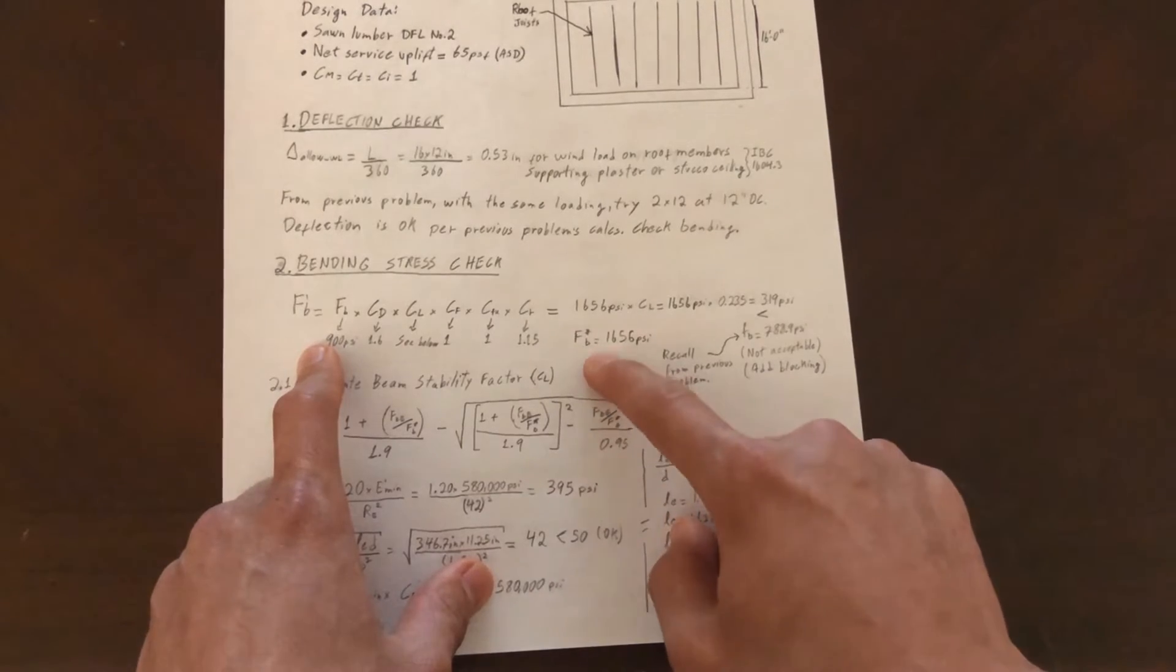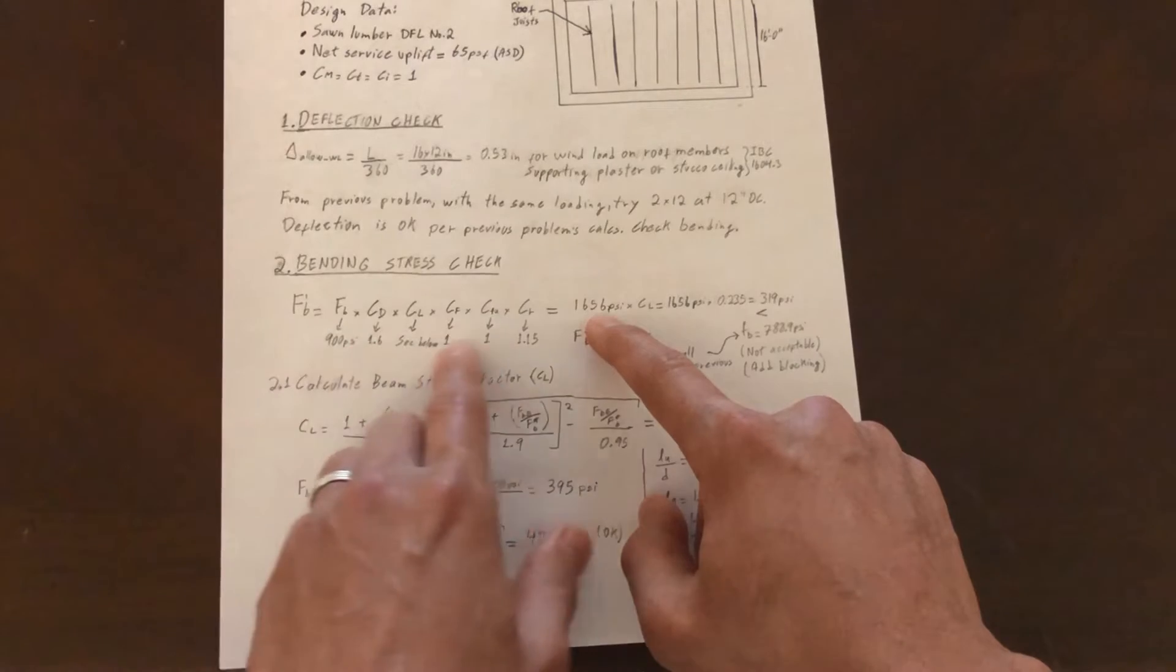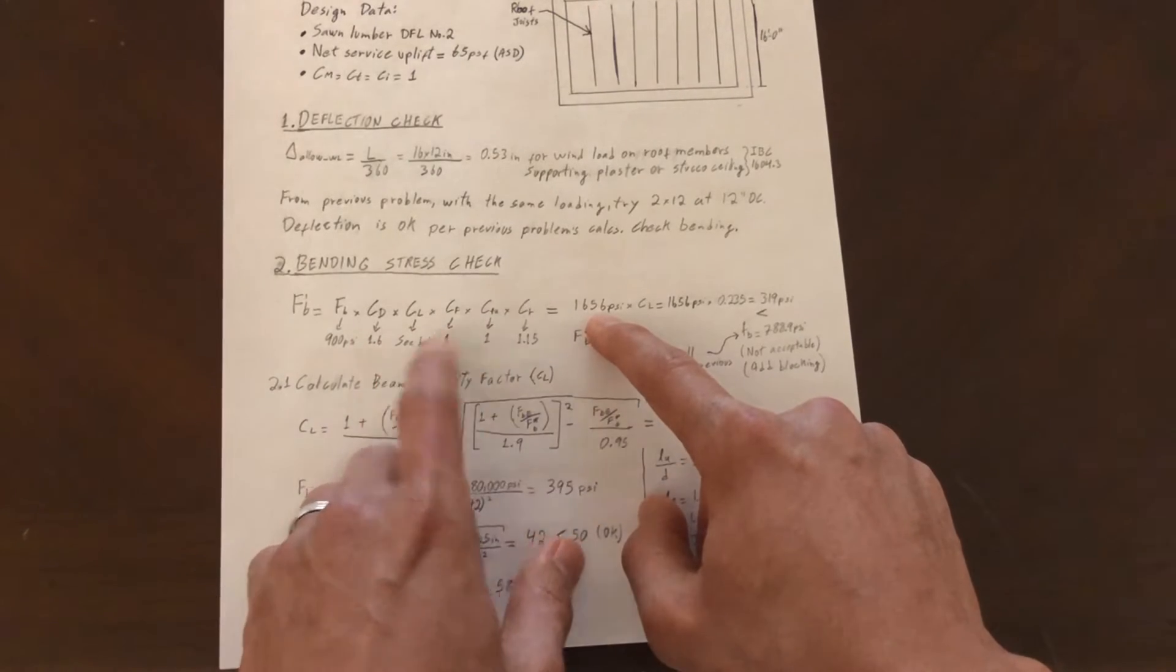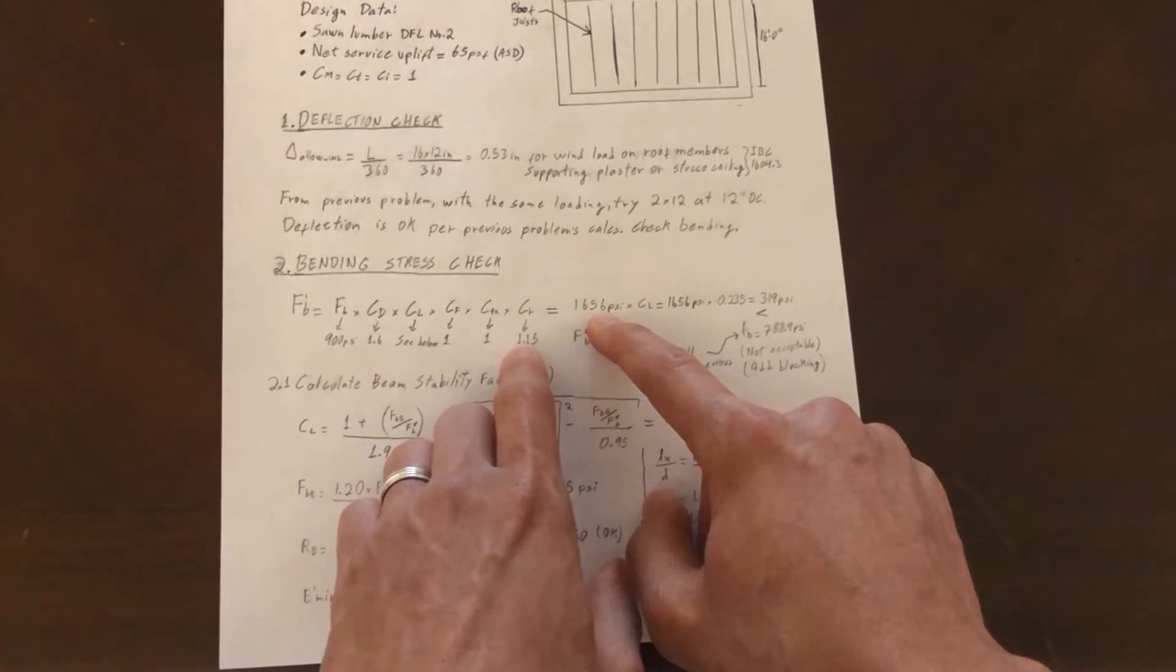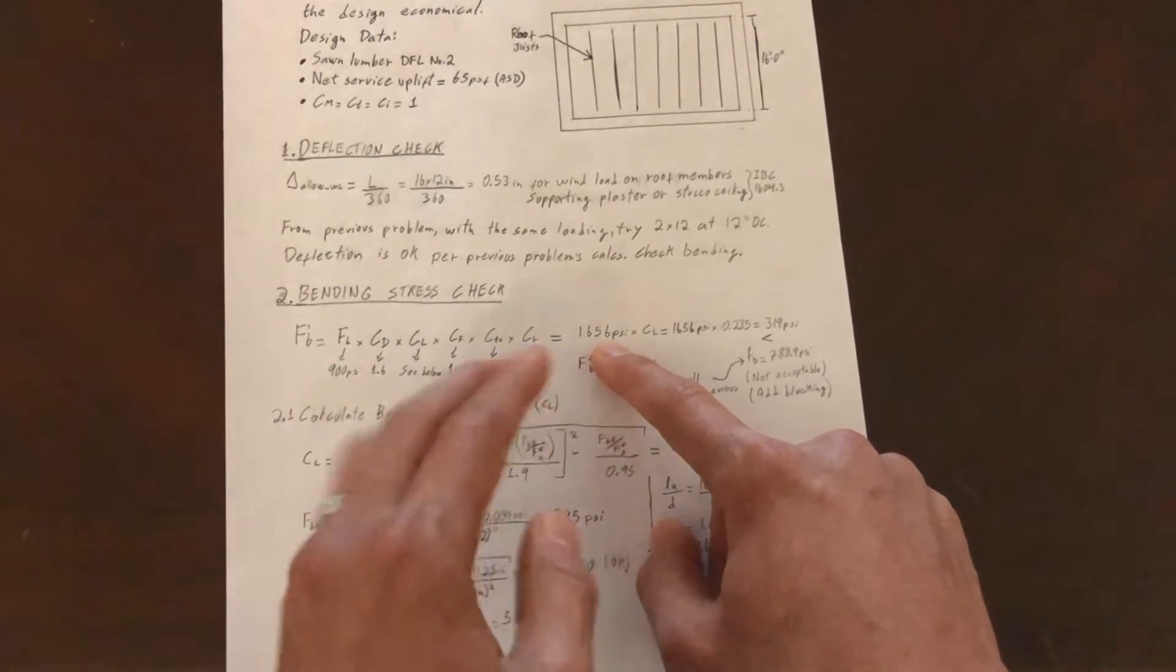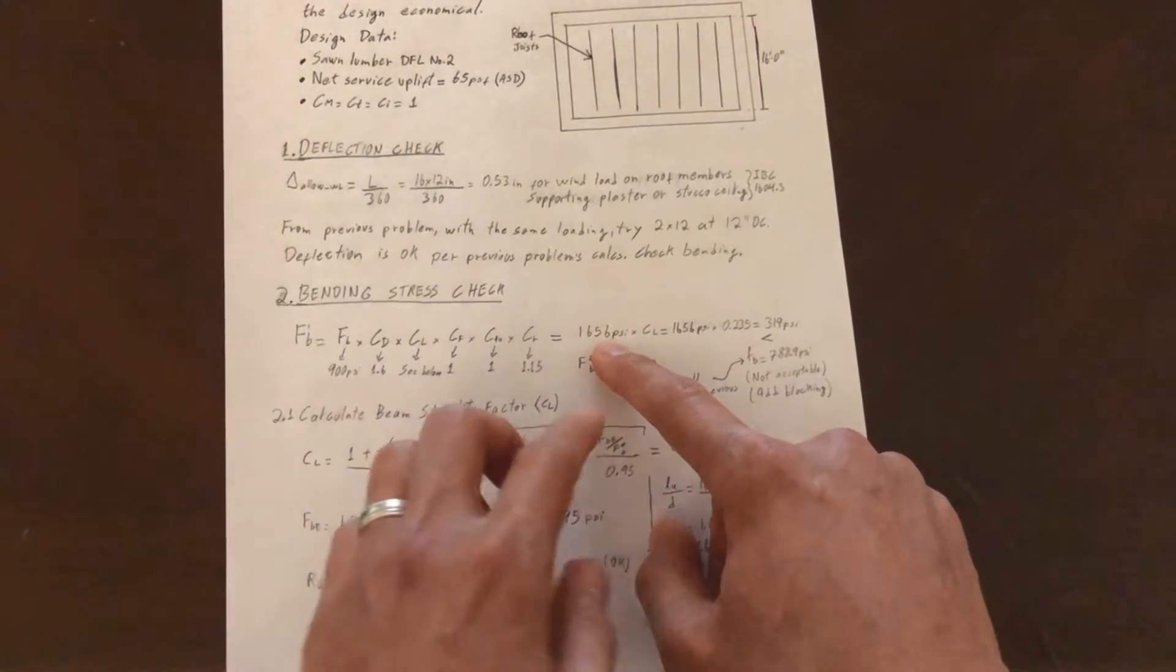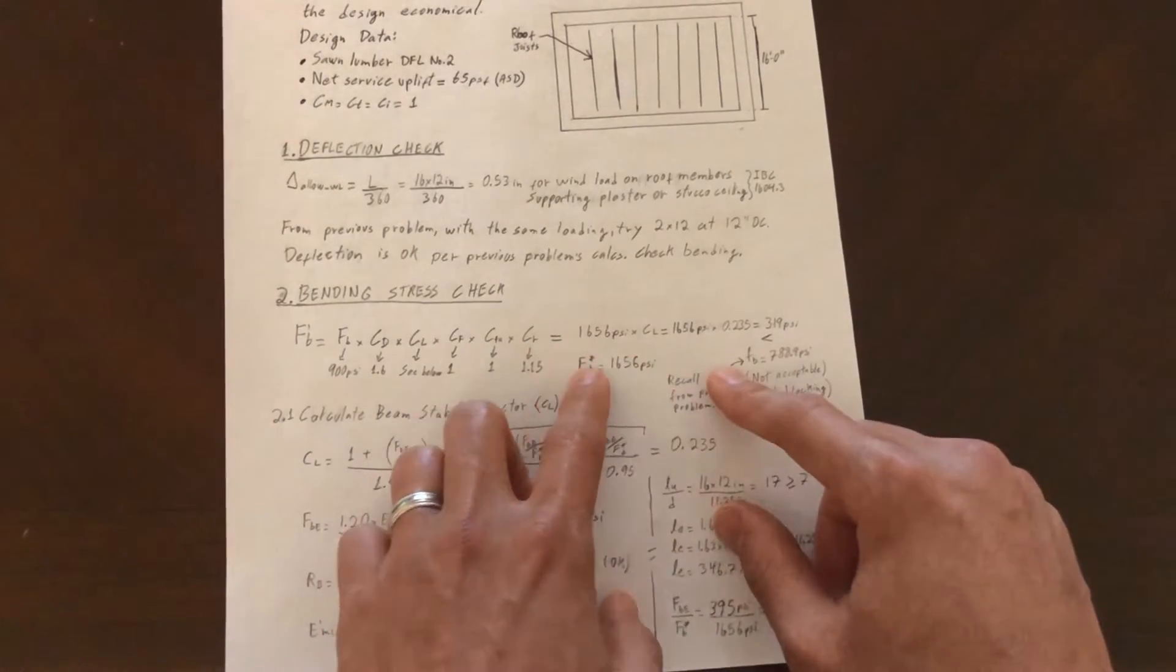Basically, we are reducing our capacity by quite a bit. As I do it here, I calculated F sub B asterisk, which is using all these factors. The only factor I did not mention was C sub R, which is the repetitive use factor.